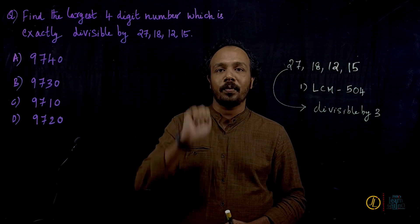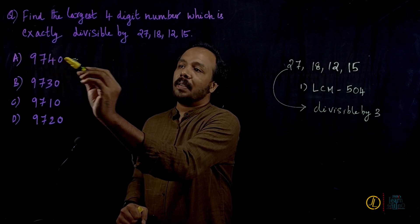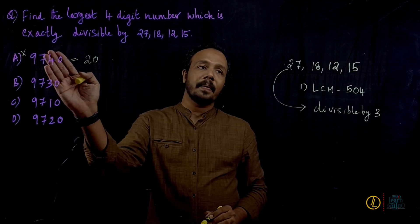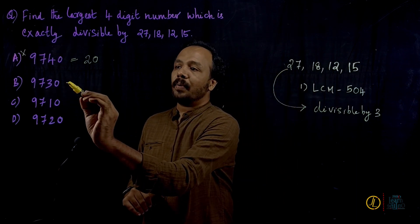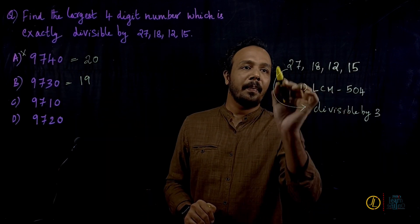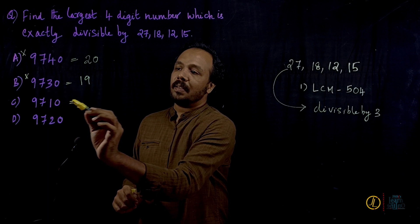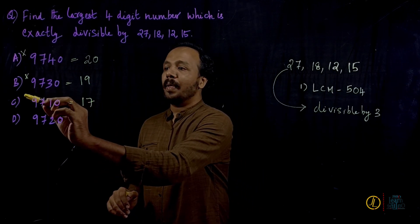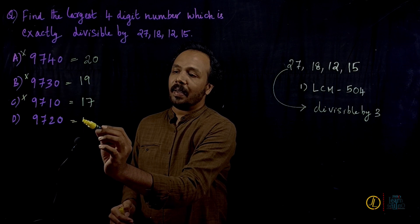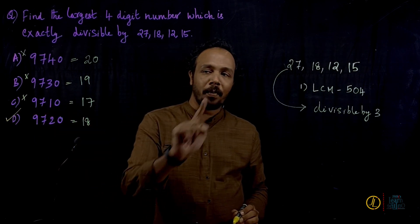For 9740: 9 plus 7 is 16, 16 plus 4 is 20 — not divisible by 9. For 9730: 9 plus 7 is 16, 16 plus 3 is 19 — not divisible. For 9720: digit sum is 18, which is divisible by 9. So 9720 is the answer — option D.